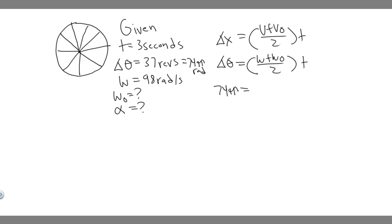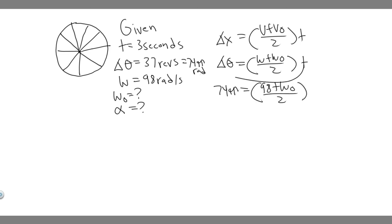Now we can plug in: 74π equals (omega, which is 98 radians per second, plus omega zero) over two, multiplied by time, which is 3 seconds. Dividing both sides by 3, 74π divided by 3 gives approximately 77.4926.